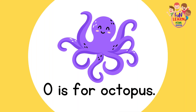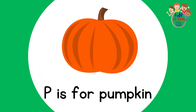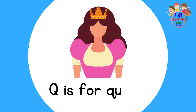O is for Octopus. P is for Pumpkin. Q is for Queen.